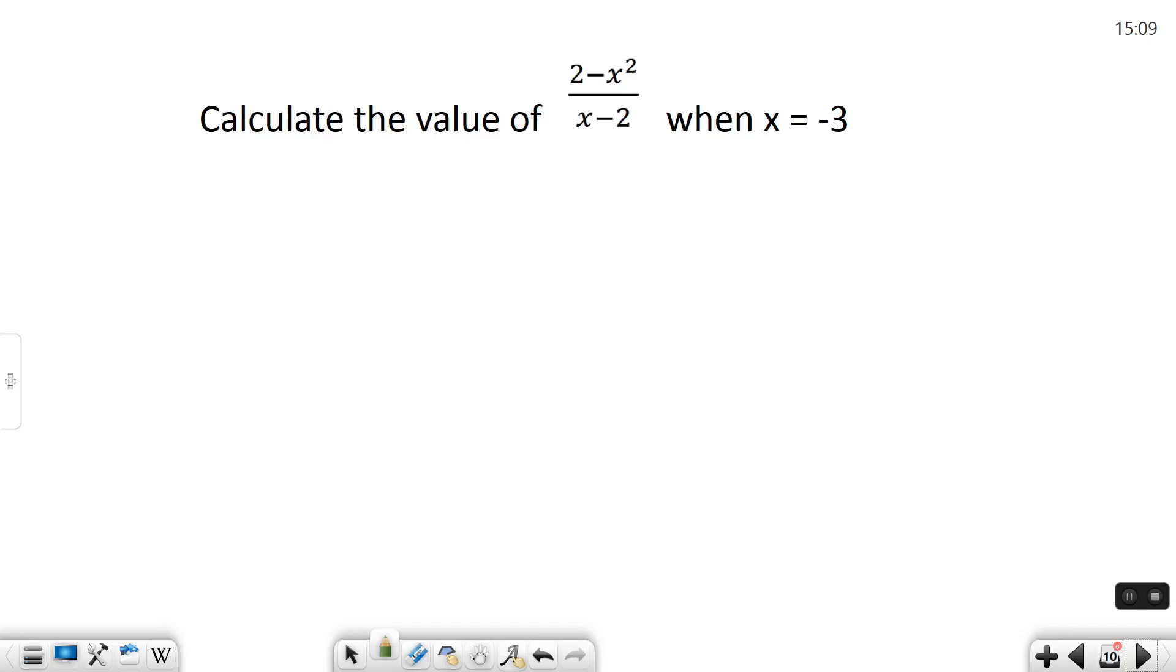What you have to do to evaluate it is plug in the value for x and use order of operations to figure out what value it is. That's what we're going to do in this case. I'm going to plug in negative 3 everywhere I see an x.